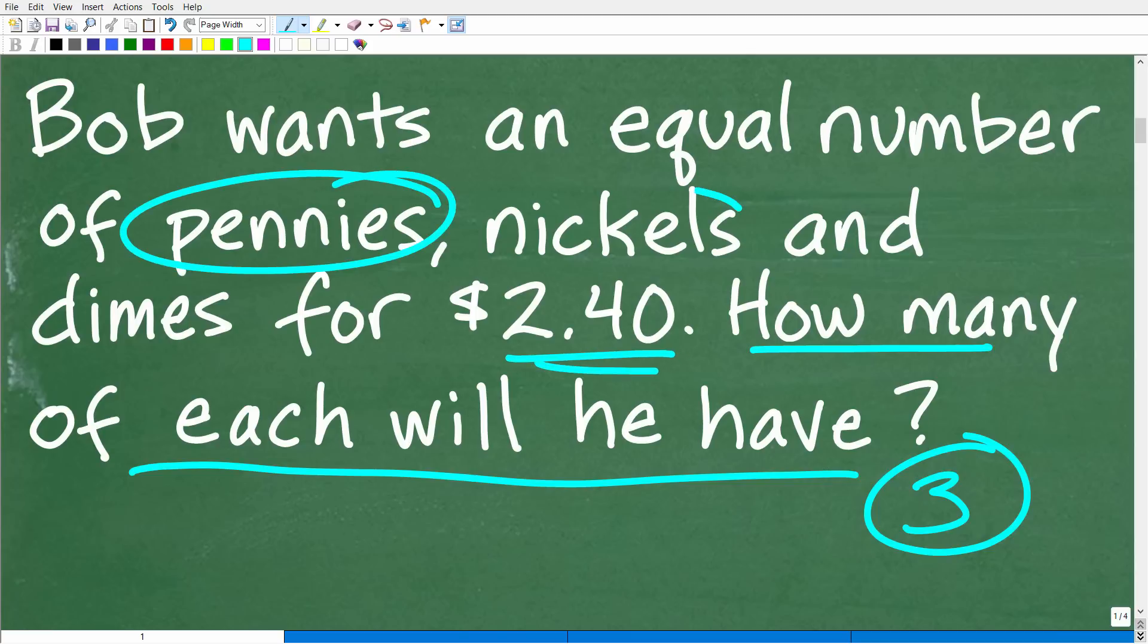Okay, so we have Bob here, he has this $2.40. He obviously has some pennies, nickels and dimes. And he wants an equal amount of each. In other words, he wants five of these five of these and five of these. But the grand total has to add up to $2.40, right? $2.40. So how many does it need? Now, one thing that we could do here is just go through trial and error, right? This doesn't require any algebra.